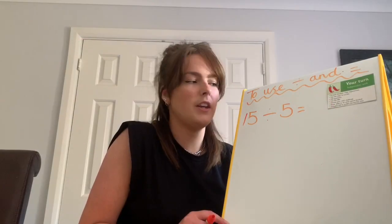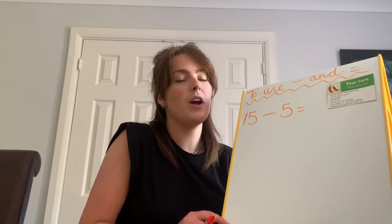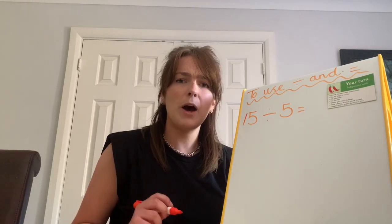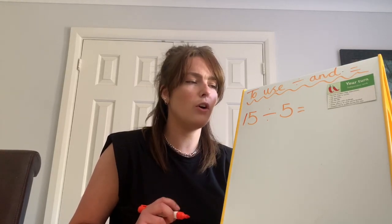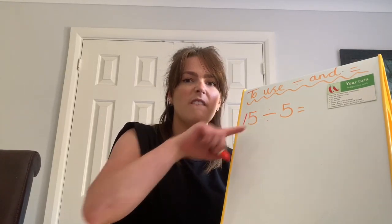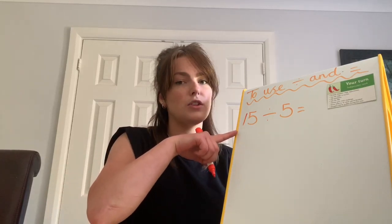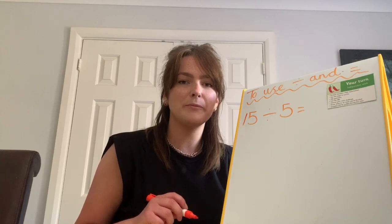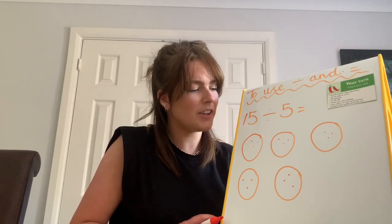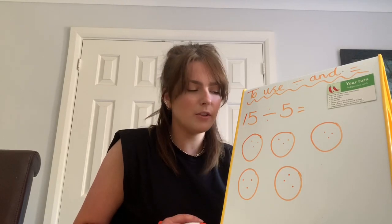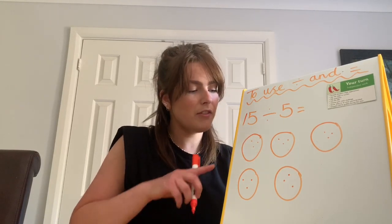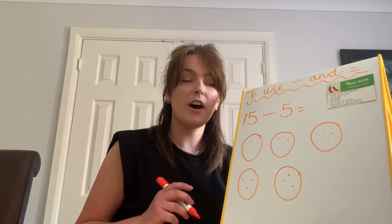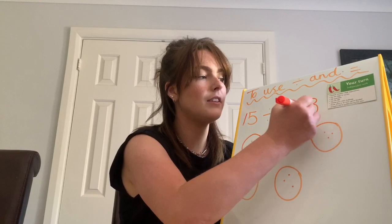Now it is your turn, year two. You are going to have a go at doing 15 divided by 5. Remember, how many circles are we going to draw? We are going to draw five. And think about how many dots you're going to share out. Pause the video now and have a go. How did you get on? I drew my five circles and I shared my 15 dots, and I found that there were three in each group. So I know that 15 divided by 5 is 3.